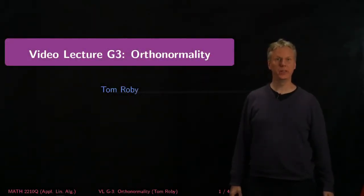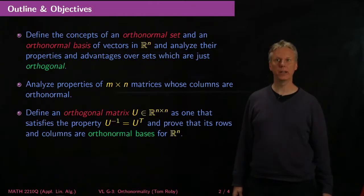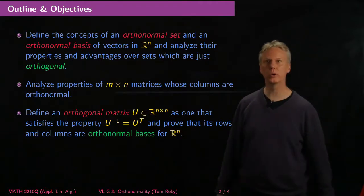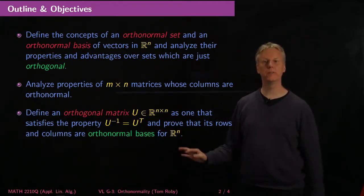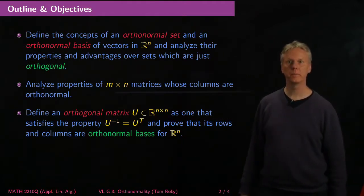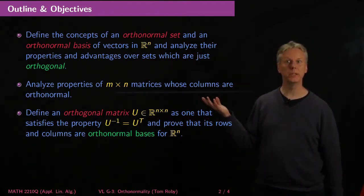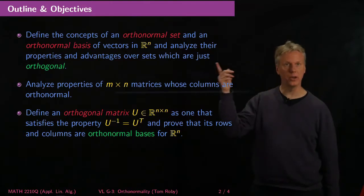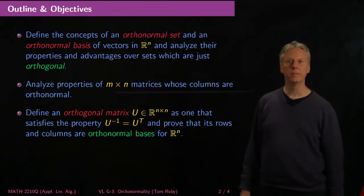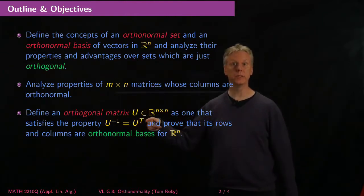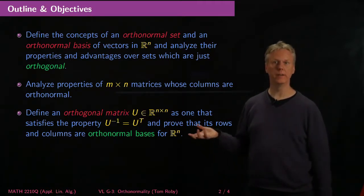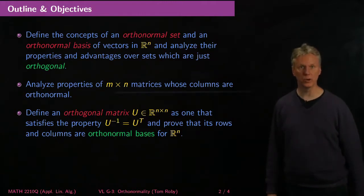Welcome to video lecture G3. This one is on orthonormality. I'll be your instructor, Tom Roby. Here are the outline and objectives. We'll define the concept of an orthonormal set and of an orthonormal basis of vectors in R^n, and analyze their properties and advantages over sets which are just orthogonal. Then we'll analyze properties of n-by-n matrices whose columns are orthonormal, and in particular we'll single out the square matrices — those that satisfy the property that their inverse equals their transpose. We'll prove that the rows or the columns of such a matrix each form an orthonormal basis for R^n.